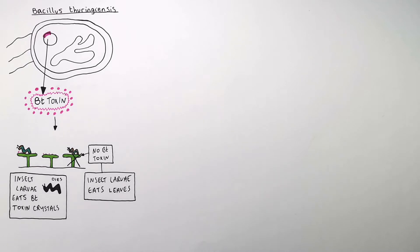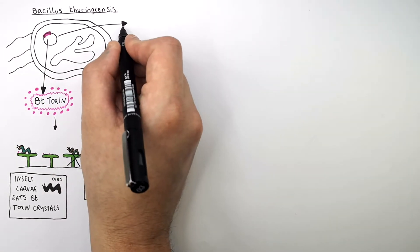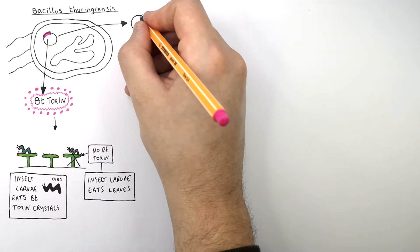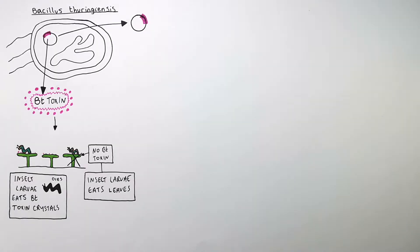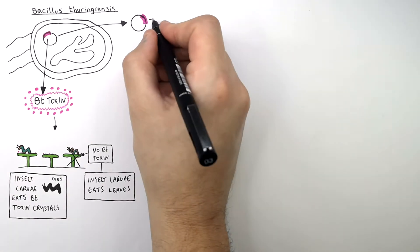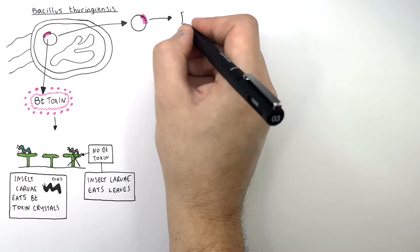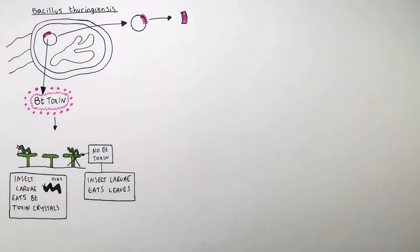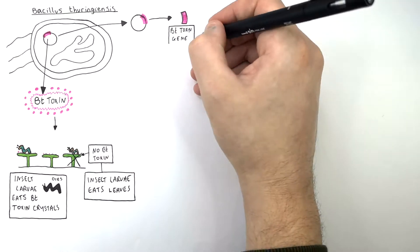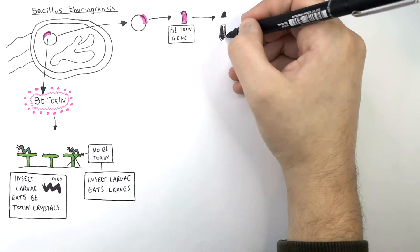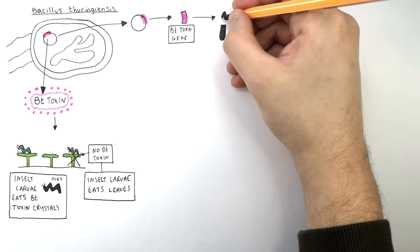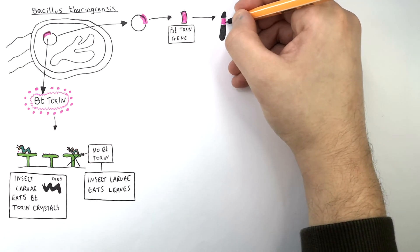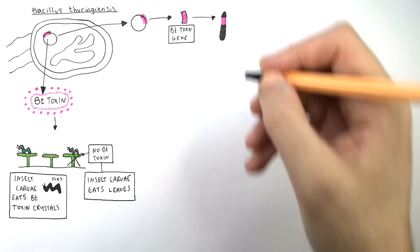The Bacillus thuringiensis was seen to produce a toxin called Bt Toxin. So scientists identified the gene responsible for making the Bt Toxin. Using genetic engineering, they removed this Bt Toxin gene from the plasmid of the bacteria. Then they get the chromosome from a plant and insert the Bt Toxin gene into the genome of the plant.